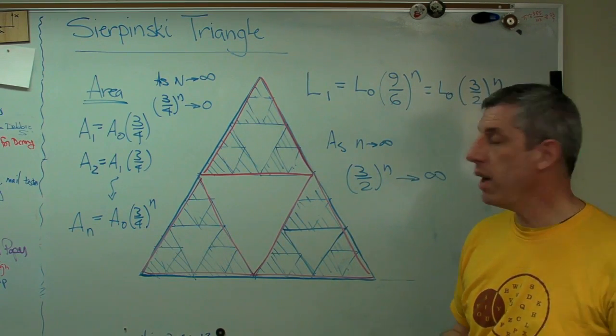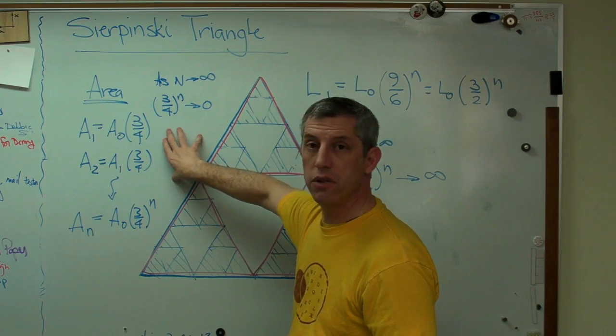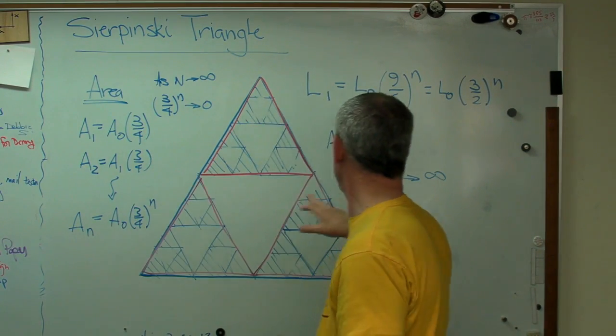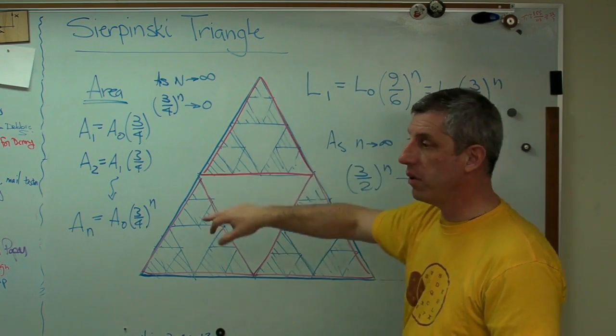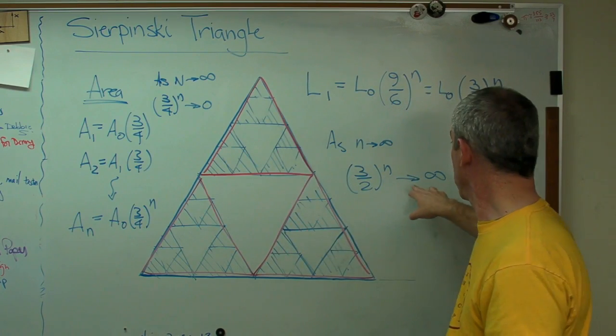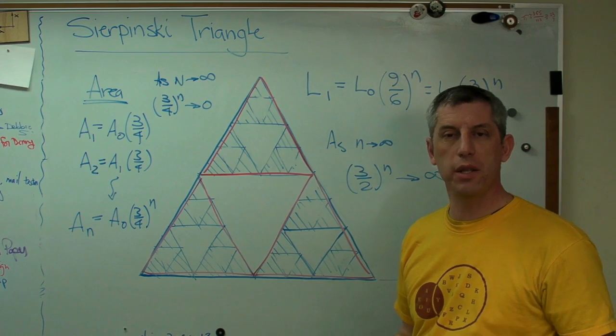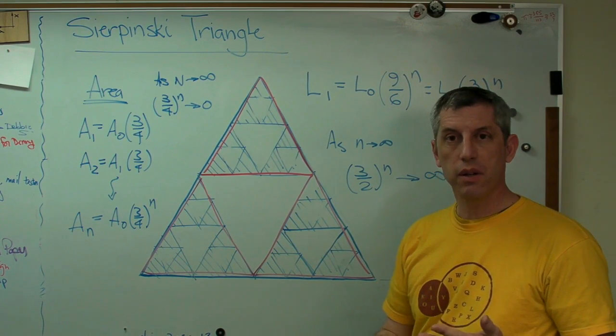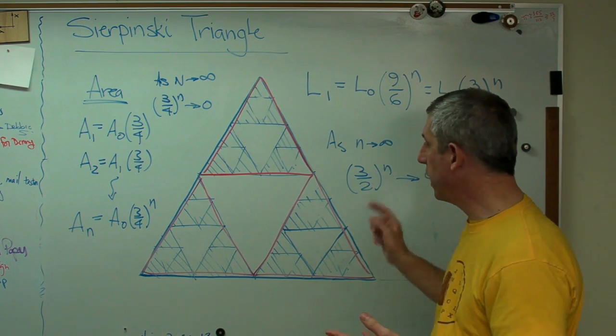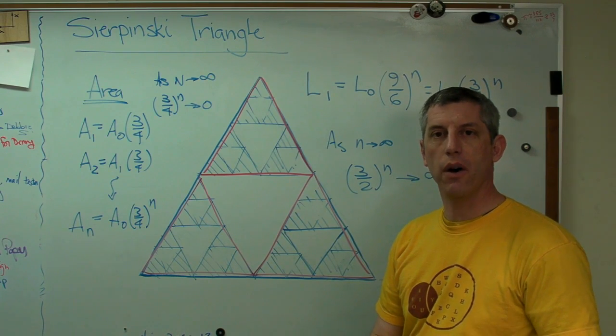So, even though this shape has an area of 0 as N goes to infinity, it has a circumference. The length of all the edges goes to infinity. So, a Sierpinski triangle has this just crazy property. Infinite length around all the edges and no area. So, there you go.